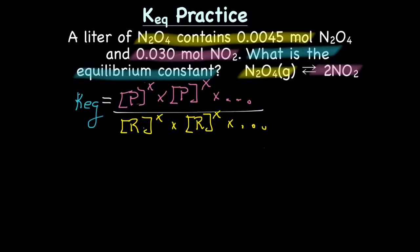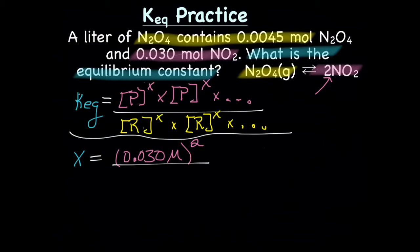Let's plug this information into our formula. We're going to have X equals, let's find our products, because products go on the top, and our product is 0.030 mol per liter or molarity. Does it have a power or a superscript? The answer is yes, because we have a coefficient. So it'll be 0.030 molar squared. We're going to divide that by our reactants. Our reactant is 0.0045 mol per liter or molarity, and there's no coefficient there, so there'll be no power.